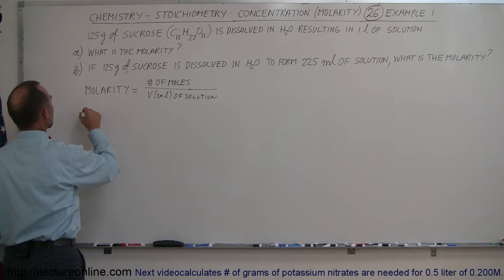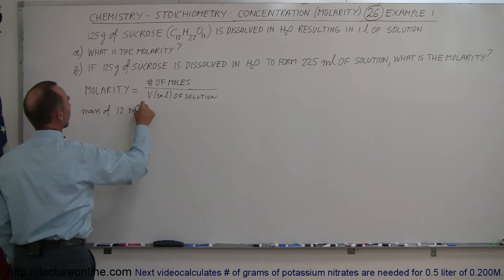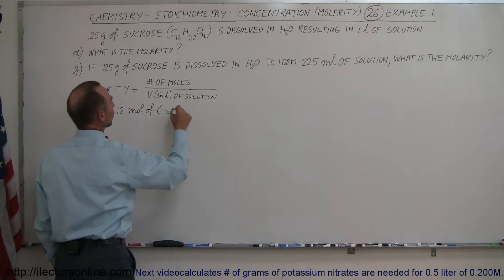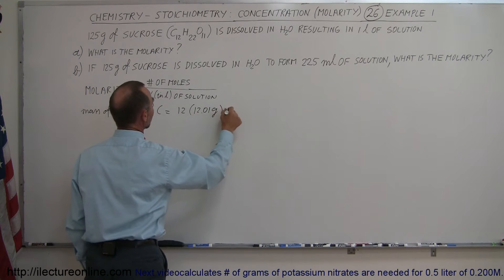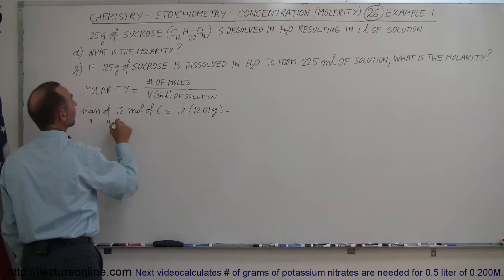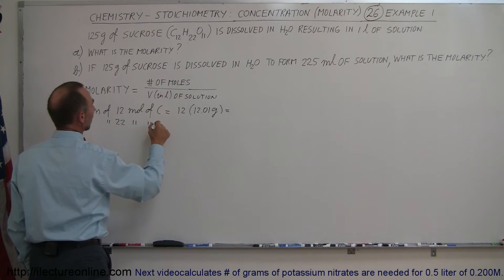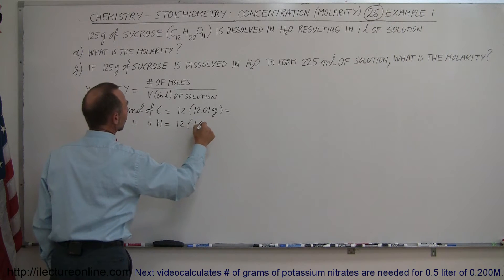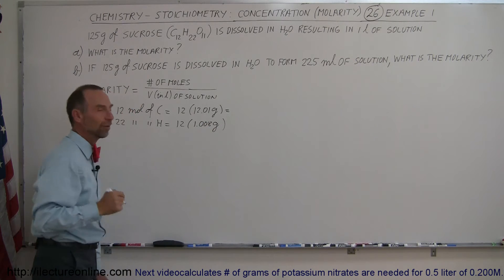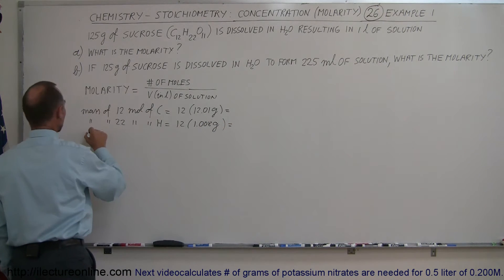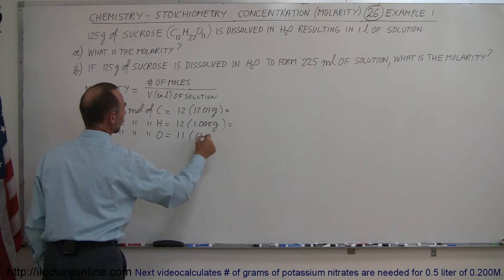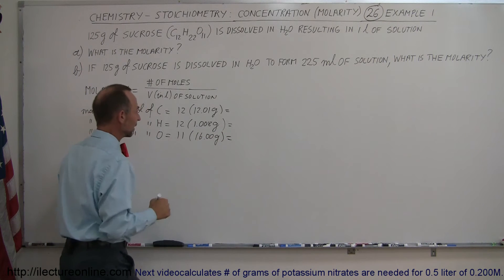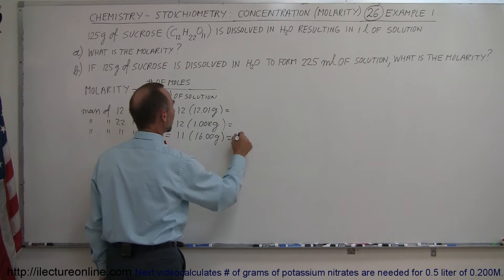So we have the molar mass, the mass of 12 moles of carbon, is equal to 12 times the mass of 1 mole of carbon, which is 12.01 grams. And then the mass of 22 moles of hydrogen is equal to 22 times 1.008 grams, because that's the molar mass of hydrogen. And then finally, the mass of 11 moles of oxygen is 11 times 16.00 grams. That one I can do without the calculator, because that would be 160 plus 16, which would be 176 grams.